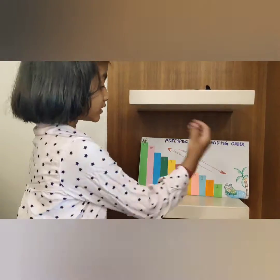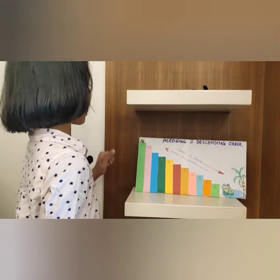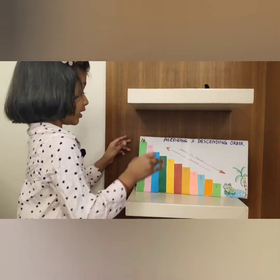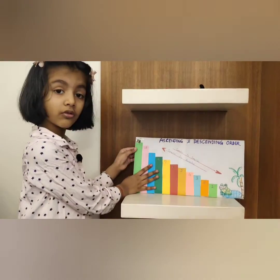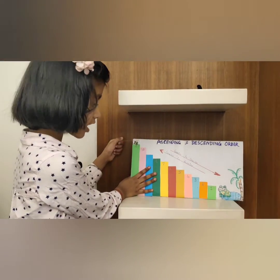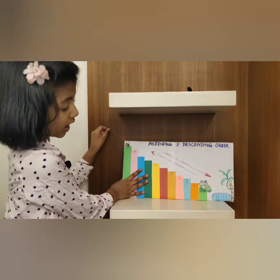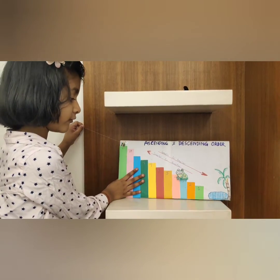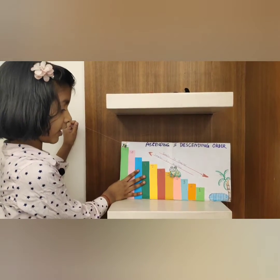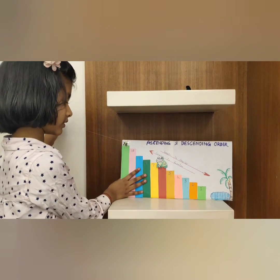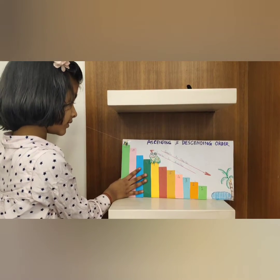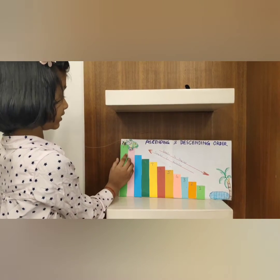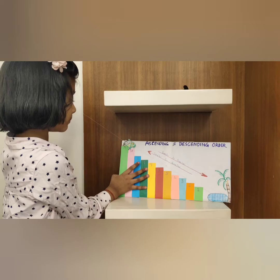So this frog is hungry and he saw one fly on the 11th step. He wants to go eat that fly. So he went to step 1, step 2, step 3, step 4, step 5, step 6, step 7, step 8, step 9, step 10, and he gulped the bug.